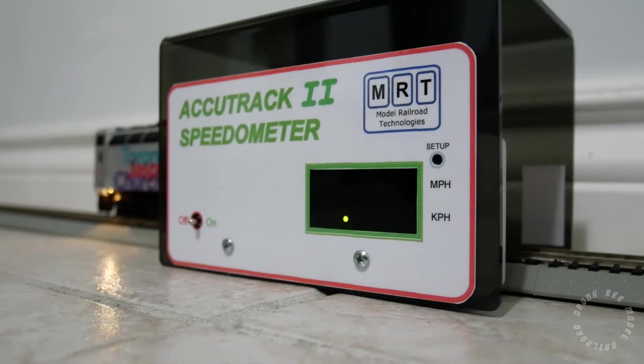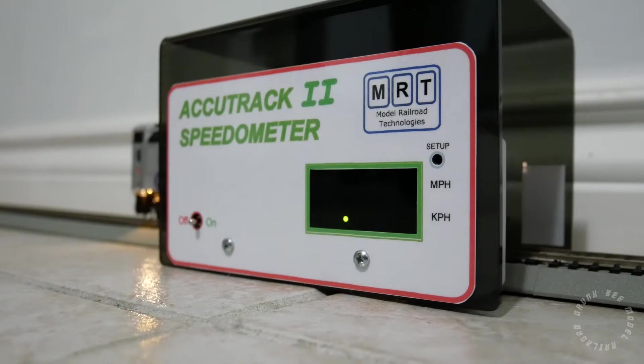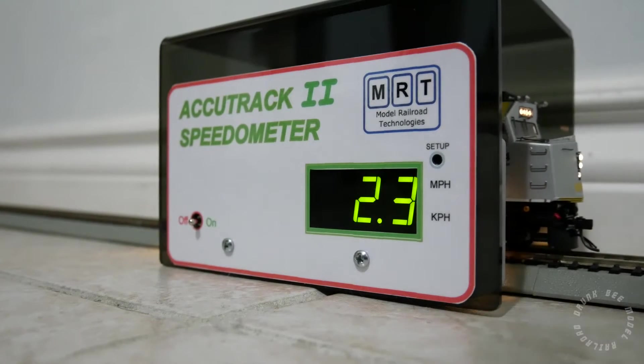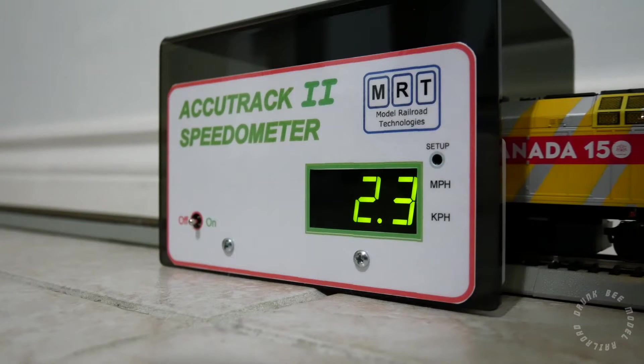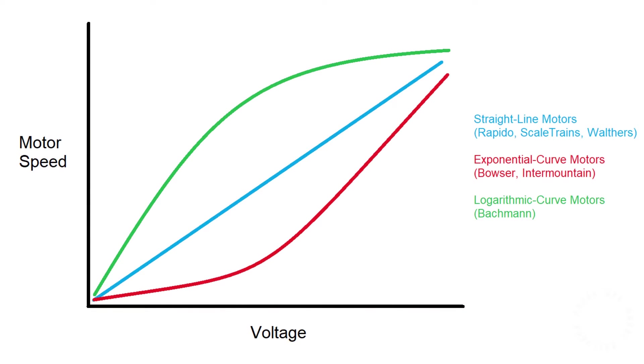Now the above method, the simple method which involves adjusting CV2, CV6, and CV5, only works for models with motors that respond to voltage changes in a straight line. Let me show you what I mean with a graph. Some manufacturers such as Rapido, ScaleTrains, and Walthers use a motor that runs at speeds in perfect correlation with the amount of voltage applied to the motor. That means the locomotive will increase its speed at an even and steady pace as the voltage increases. These brands can use the simple speed matching method because their performance properties can be easily defined using just three points, which are CV2, CV6, and CV5.